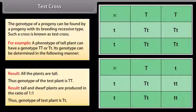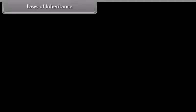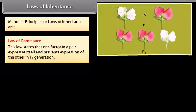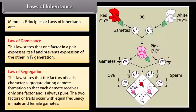Laws of Inheritance. Mendel's principles or laws of inheritance are: Law of Dominance — one factor in a pair expresses itself and prevents expression of the other in the F1 generation. Law of Segregation — the factors of each character segregate during gamete formation so that each gamete receives only one factor and is always pure; the two factors occur with equal frequency in male and female gametes.